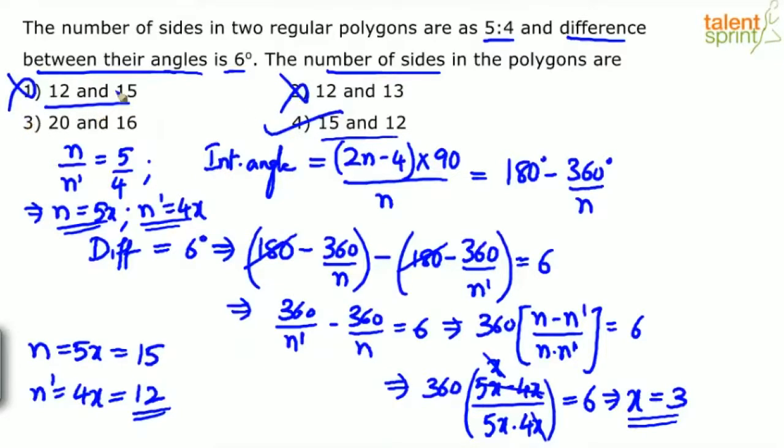From that, we can rule out option 1 because the answer should be 15 and 12 if at all these are the right values. So options 1 and 2 are ruled out.